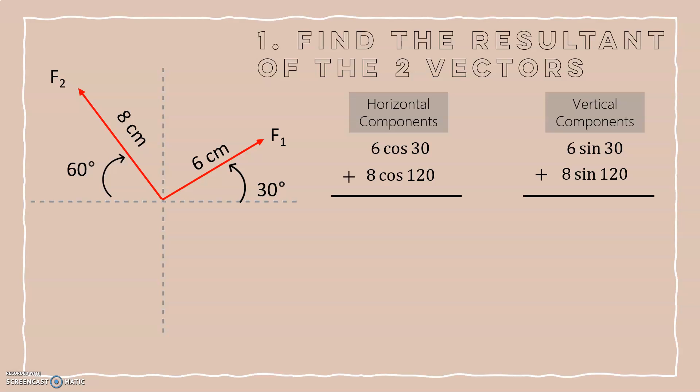So now let's add both of our components up separately. If you do that, your horizontal components will come up to be 1.196, and the vertical components will come up to be 9.928.